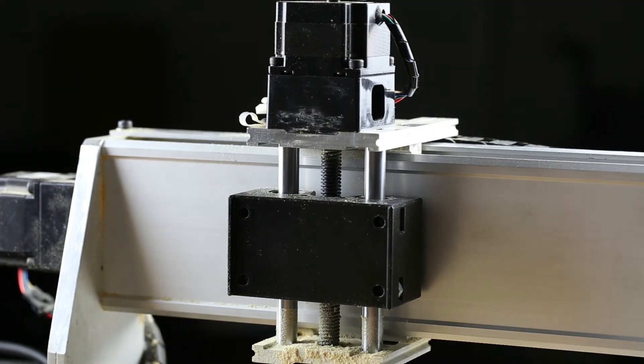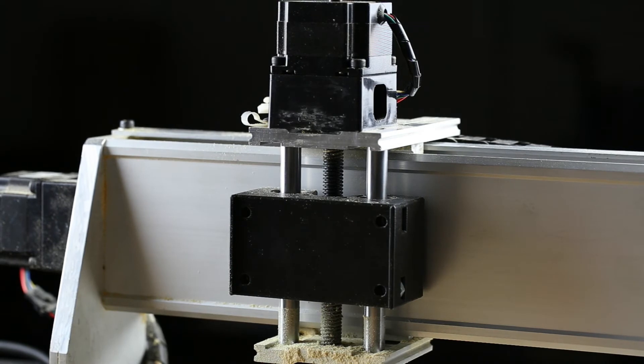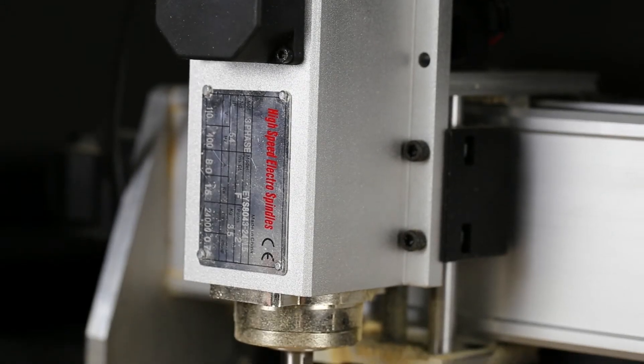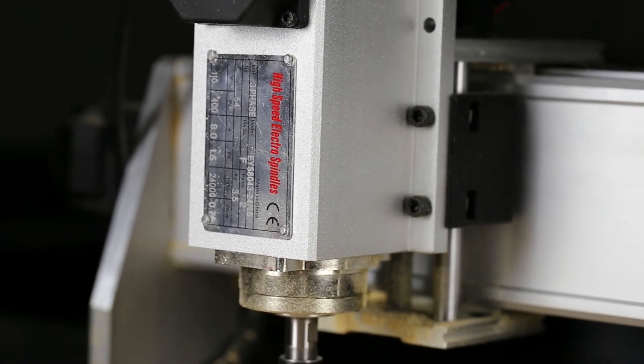Now all you need to do is assemble it. Be careful before you put the motor back on that the carriage is free to move the entire extent without too much resistance. To install the spindle you'll need four one inch long quarter twenty screws and nuts.